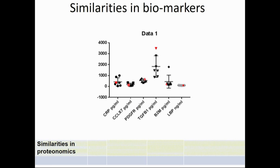We've also done some research in proteomics, showing upregulation of proteins in mastocytosis. One case in red is a patient with hereditary alpha tryptasemia — you can see similarities in the pattern of proteins that are upregulated. We aim to do the same with the mast cell activation syndrome patients.